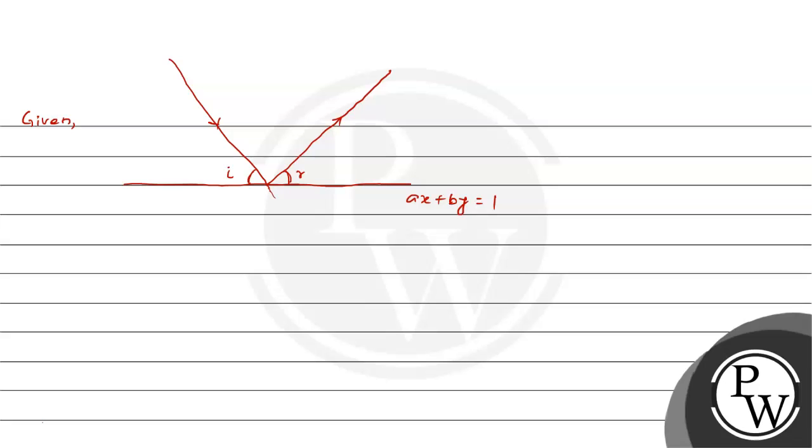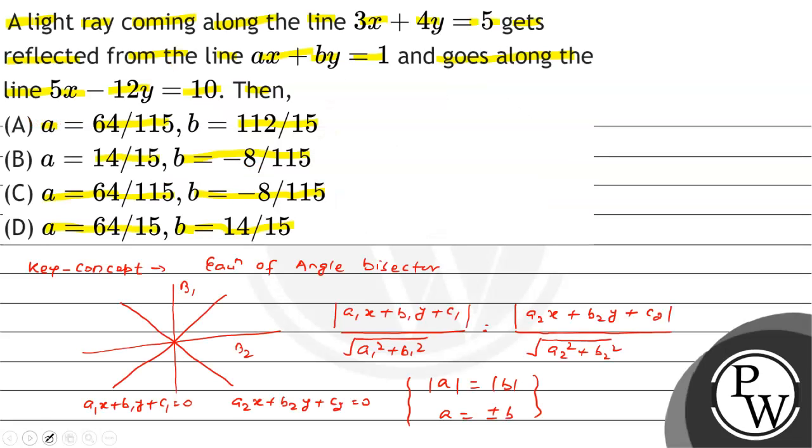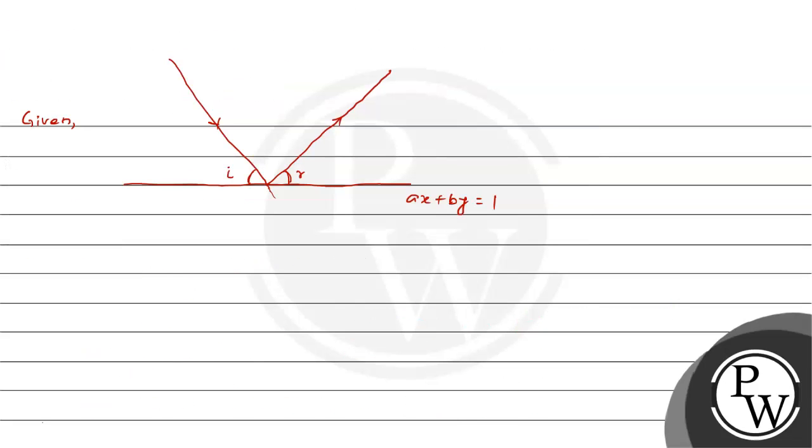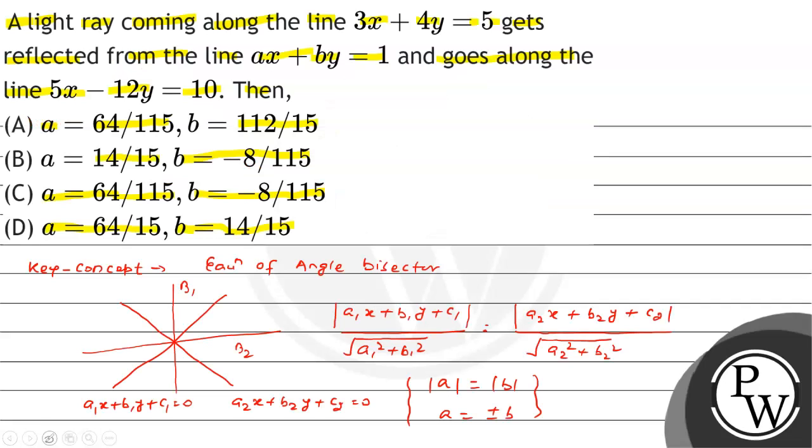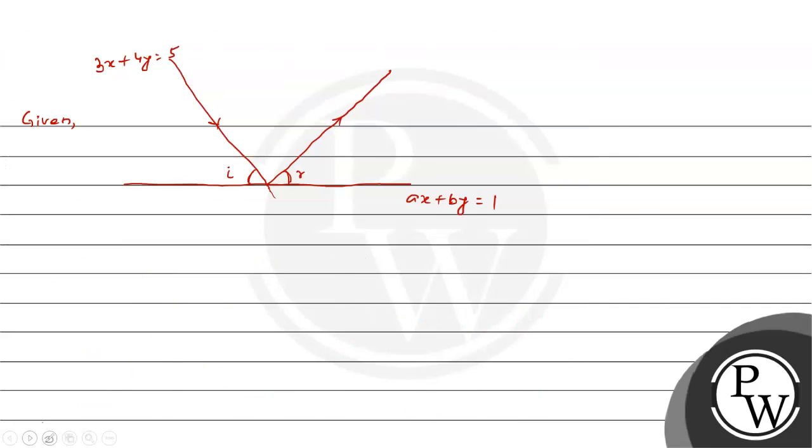this line and this line, both are bisectors. So we can say that ax plus by equal 1 is the bisector of the incident and reflected ray. Incident ray is 3x plus 4y equal 5 and reflected ray is 5x minus 12y equal 10.